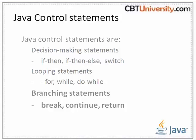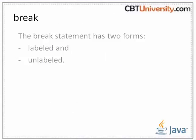In this session, we are going to learn about branching statements: break, continue, and return. The break statement has two forms: labeled and unlabeled. We have seen break in an unlabeled switch statement, which can also be used to terminate a for, while, or do-while loop.